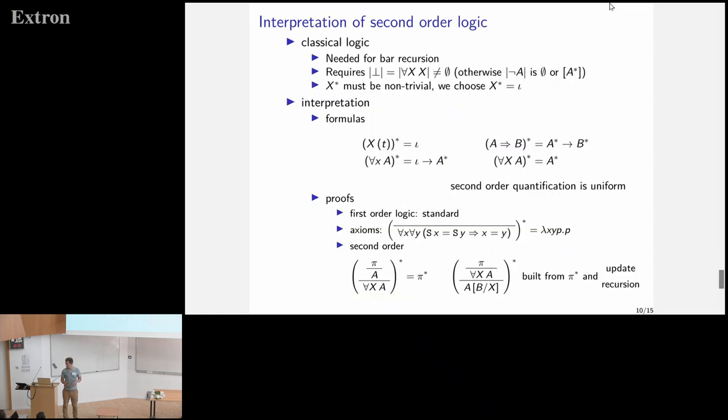It looks like this. First, we need to work in classical logic. It's required in some sense in order for having bar recursion that works. We interpret the basic types as the set of natural numbers for the same reason. And then on the side of formulas, atomic formulas are interpreted as the set of natural numbers. On the side of quantifications, first-order quantification is relativized to the set of natural numbers. But second-order quantification is completely uniform.